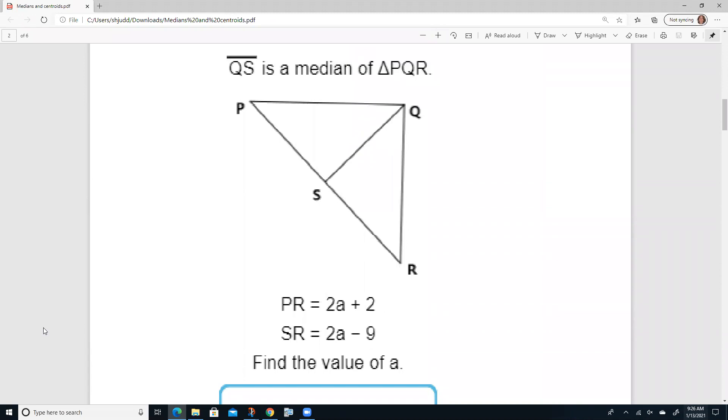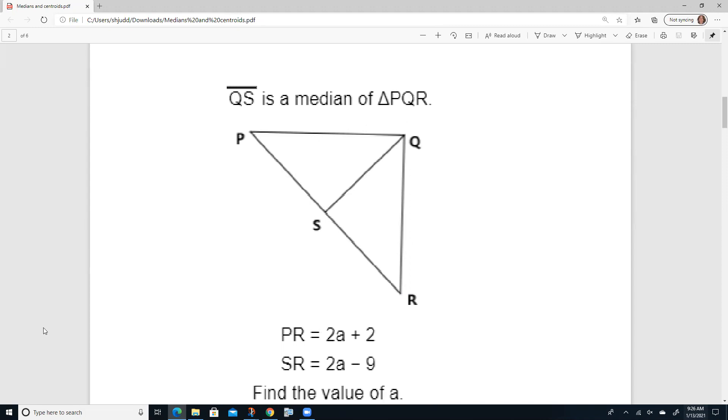So it says QS is a median. Now, if QS is a median, that means that it cuts PR in half, so this side is congruent to this side.